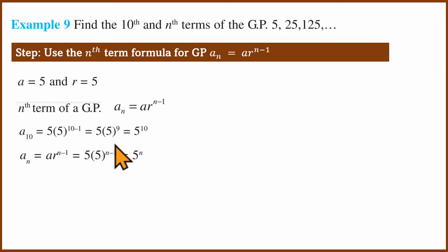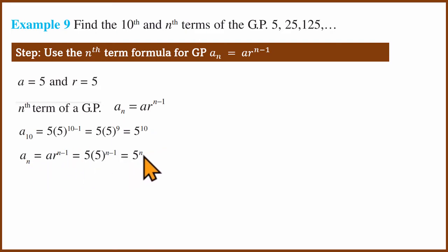So the 10th term is 5 to the power 10, and the nth term is 5 to the power n. We used the straight formula to solve the question.